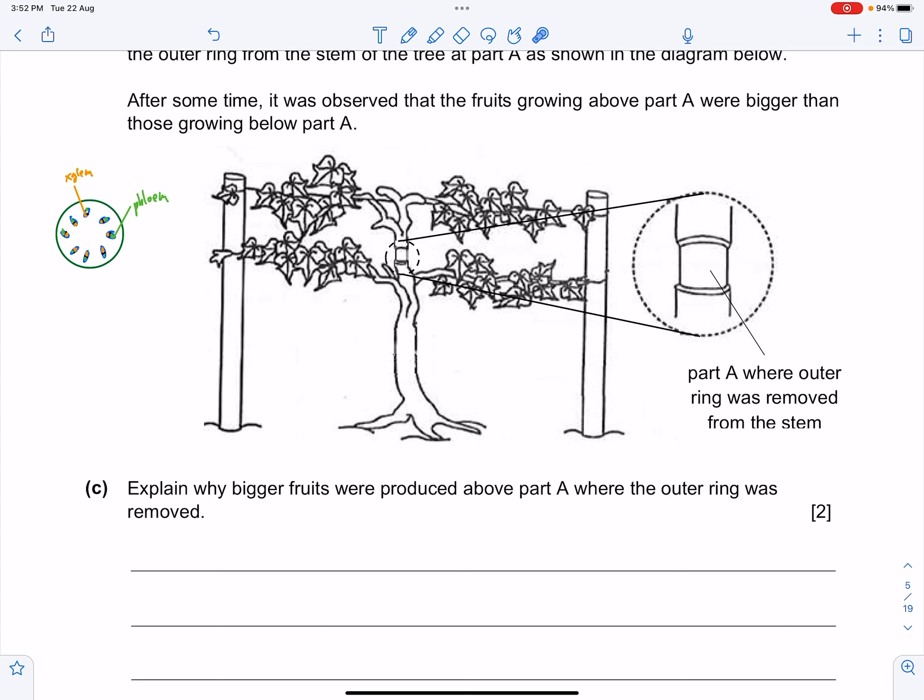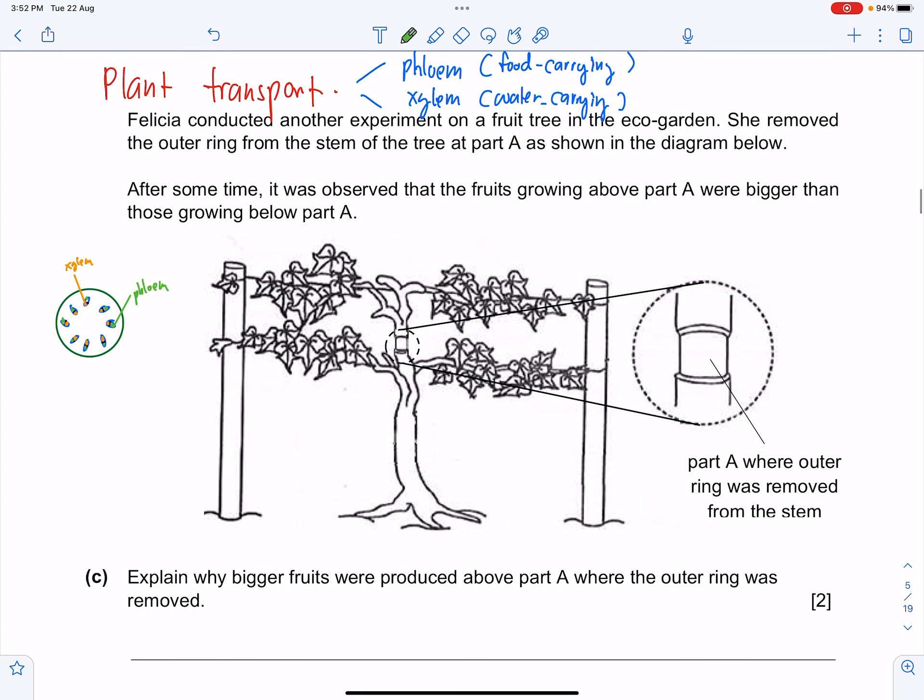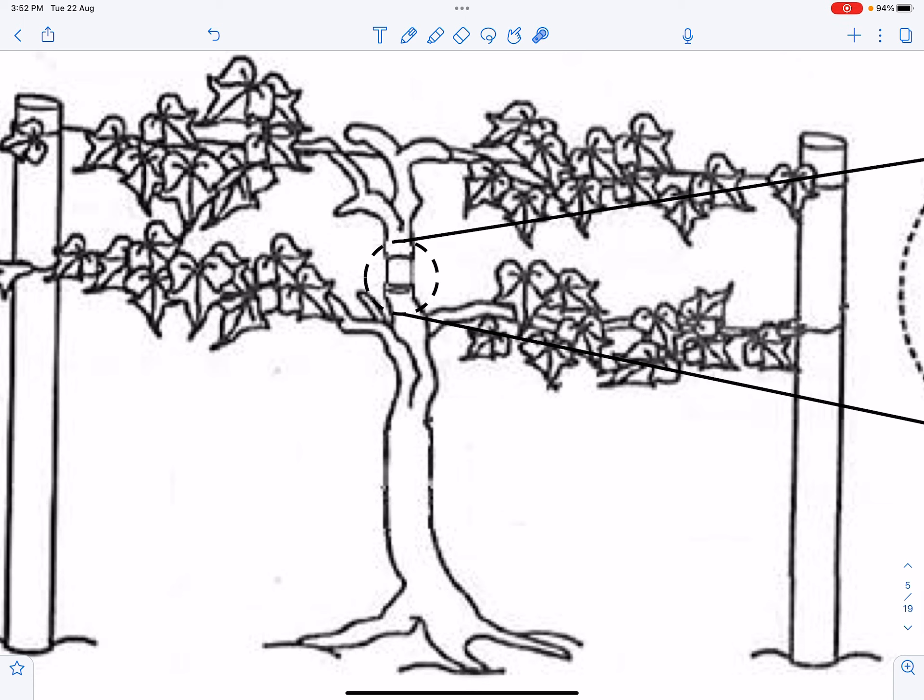So what does it mean? First thing, when you remove the outer ring, you are actually removing the xylem or the food carrying tube. This is actually being removed, no more.